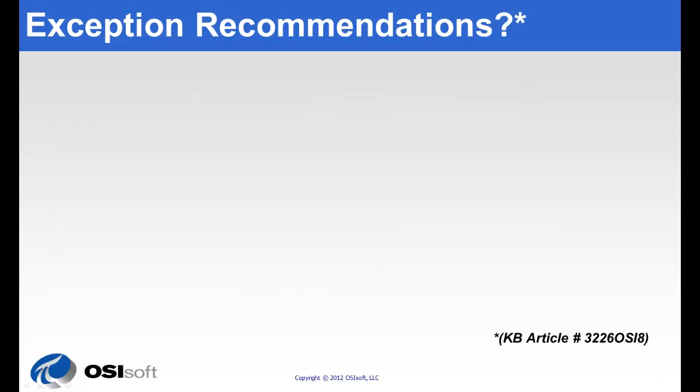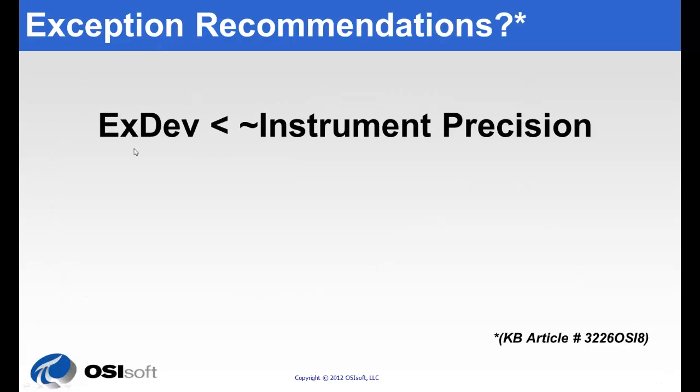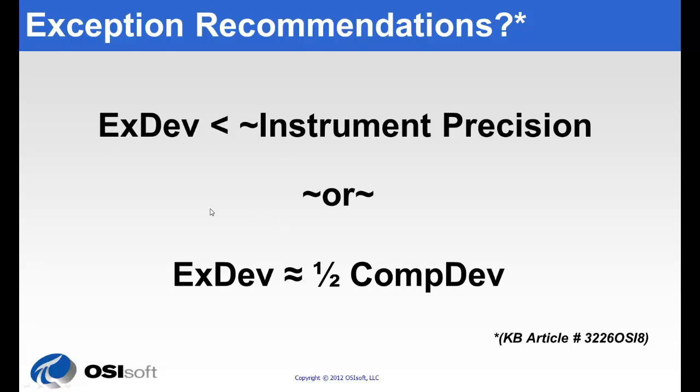OSISoft's recommendations for exception are that you set the exception deviation to a little bit less than the instrument precision or perhaps about half of the compression deviation. For more details you can consult this KB article 3226OSI8 at techsupport.osisoft.com.